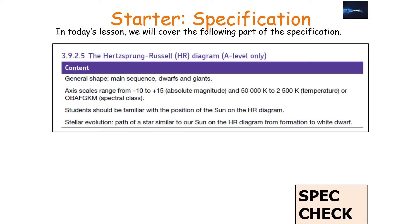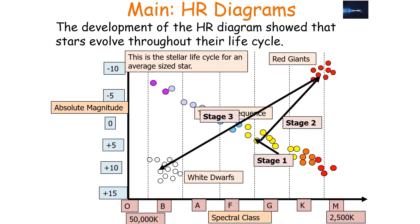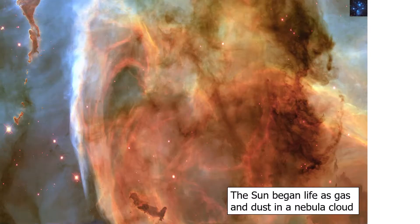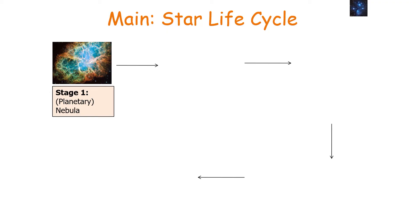This leads to the following part of the AQA A Level Physics specification 3.9.2.5, the Hertzsprung-Russell diagram. The development of the Hertzsprung-Russell diagram showed that stars evolve throughout their life. We can separate the stellar evolution of a star into different parts, which is revision from GCSE physics. The Sun and all stars begin life as gas and dust in a nebula cloud, so the first stage of a star's life cycle is the nebula stage.